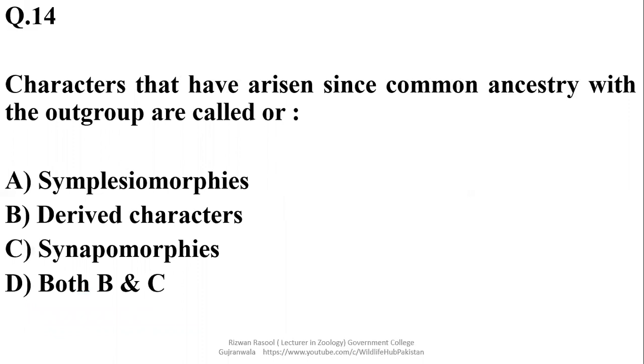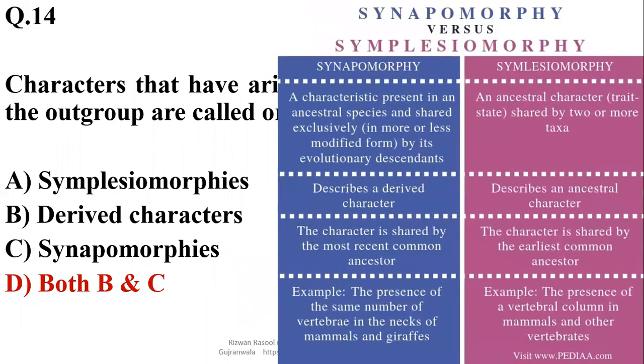Characters that have arisen since common ancestry with the out group are called - they are known as derived characters or synapomorphies which are derived characters. But synapomorphies they are referred as shared characteristics. Symplesiomorphy is an ancestral character shared by two or more taxons, while synapomorphies is a characteristic present in an ancestral species and shared exclusively by its evolutionary descendants. We'll try to cover its examples in the next slide.